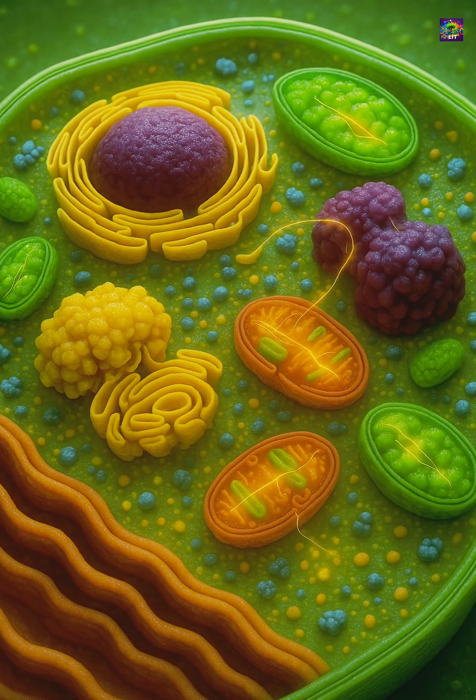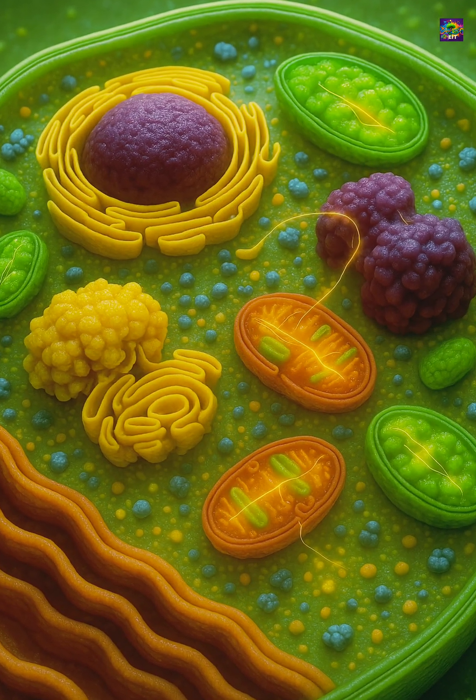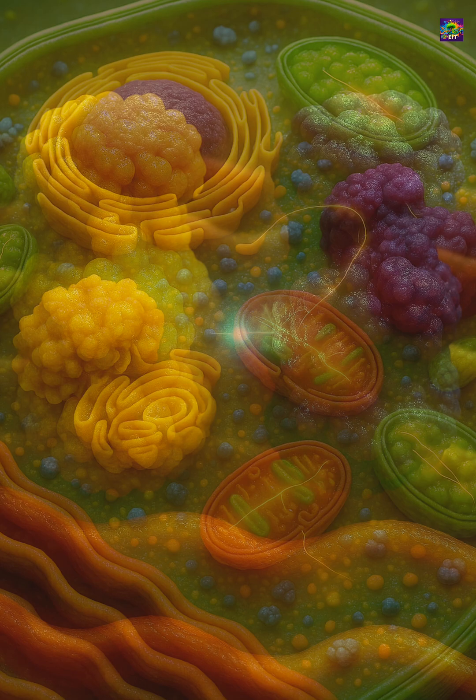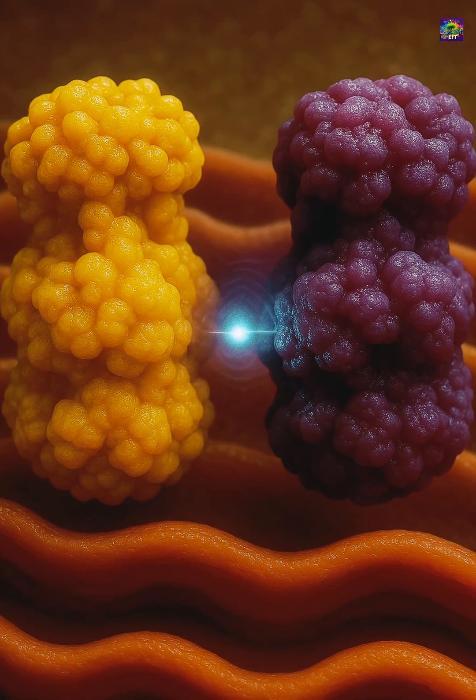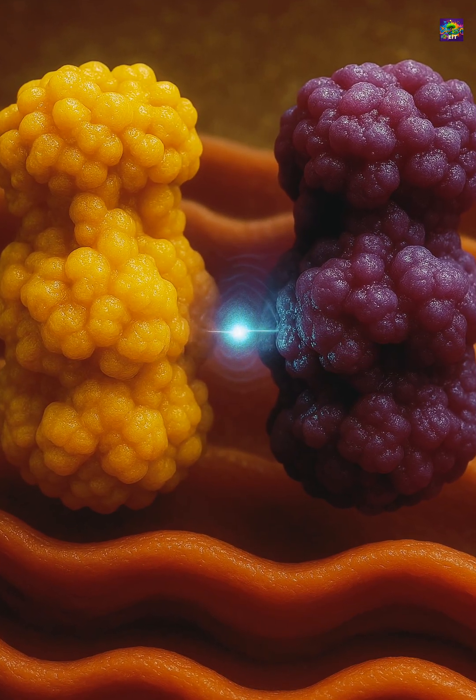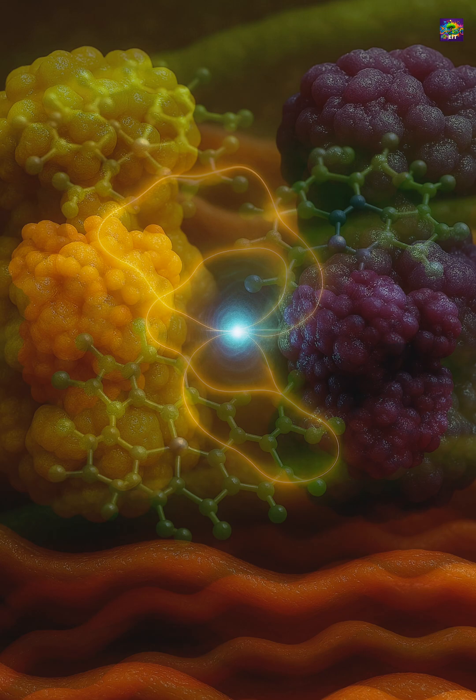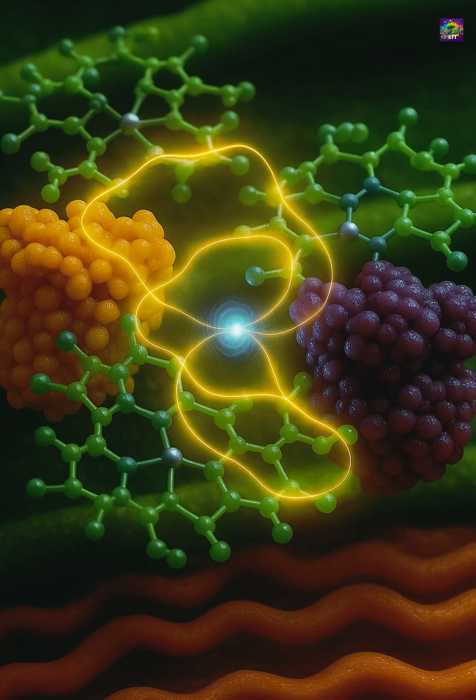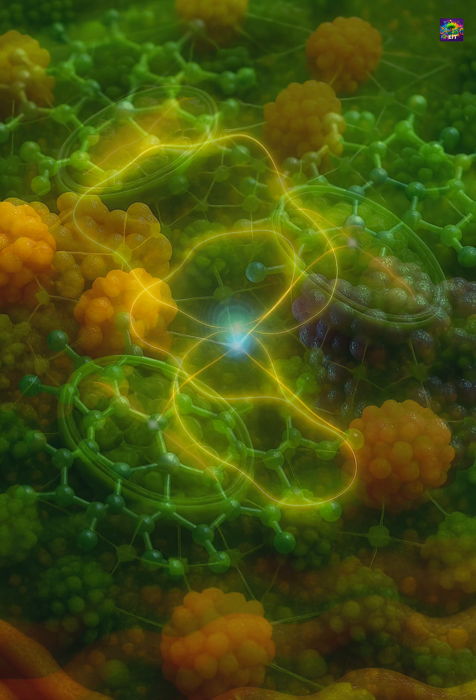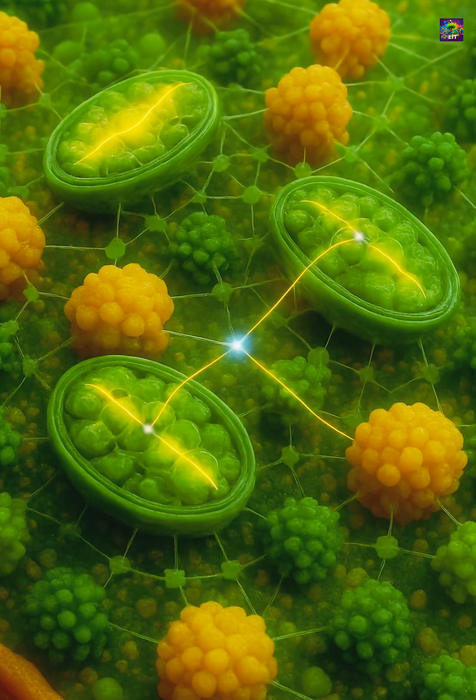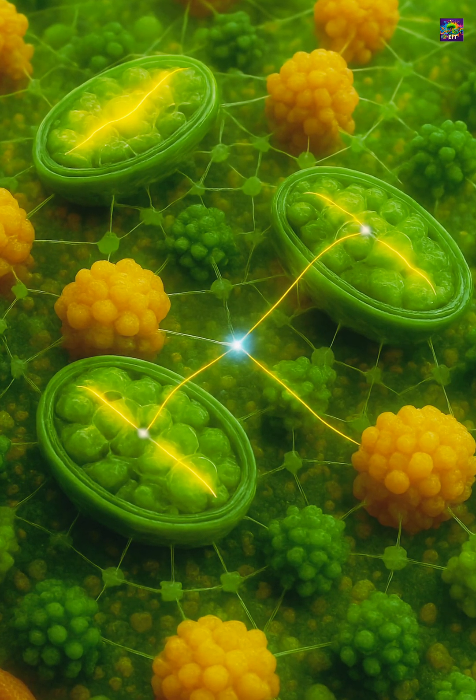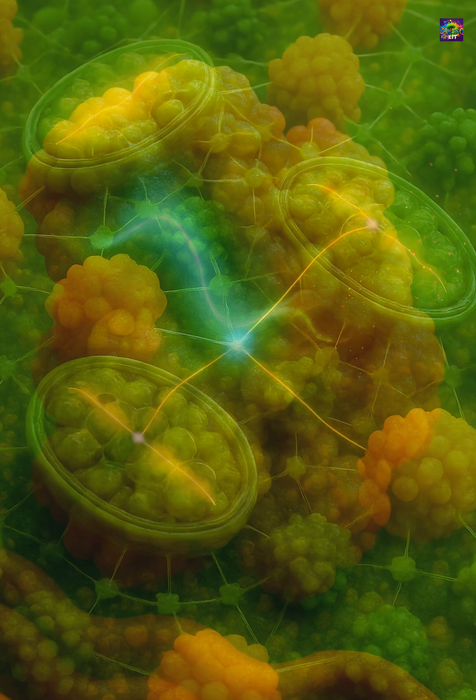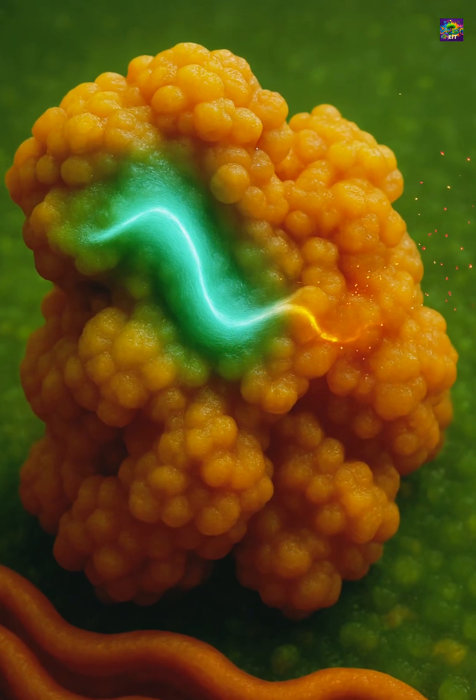Inside every living cell, complex molecules like those in mitochondria and chloroplasts rely on quantum effects to move particles with precision. For example, electrons in the electron transport chain don't just hop from one molecule to the next, they may tunnel through barriers, or exist in coherent states that allow more efficient energy transfer. These strange behaviors give life its remarkable efficiency, but they only work under strict conditions.